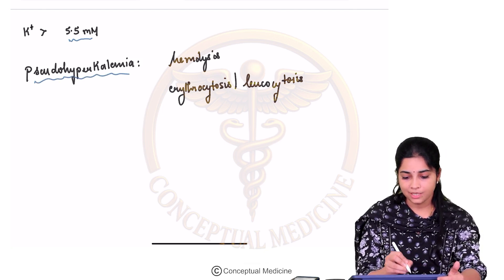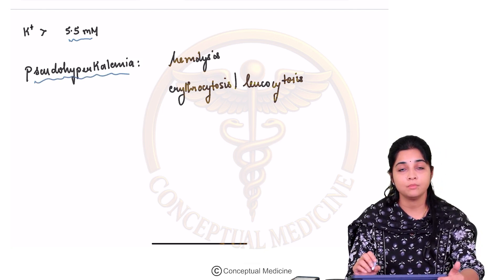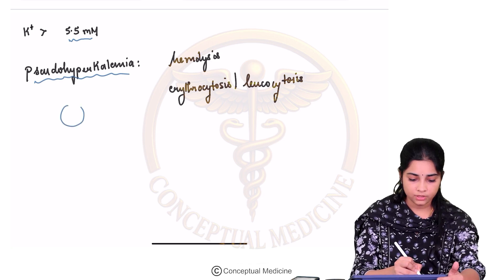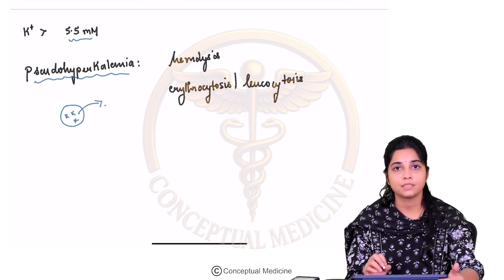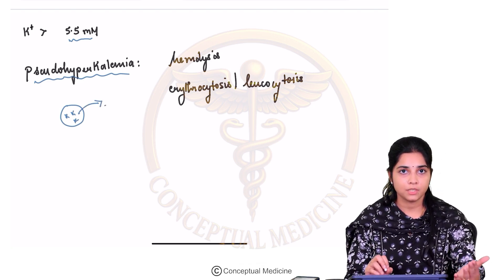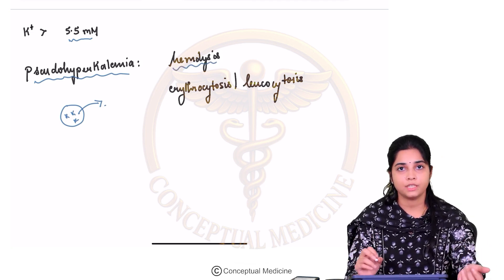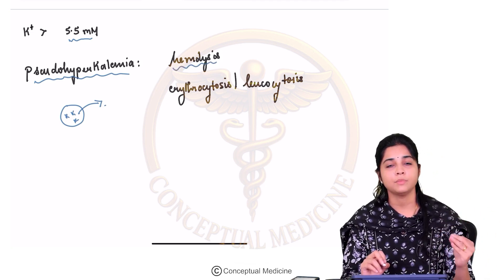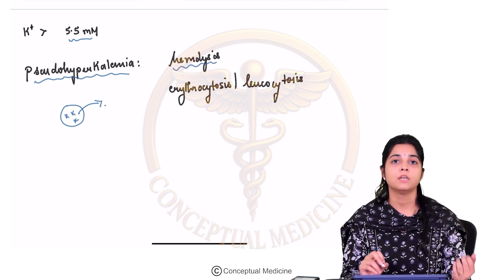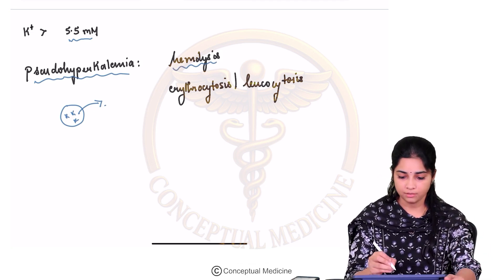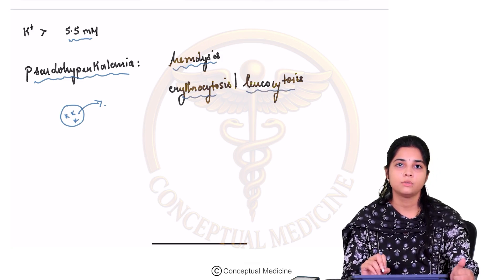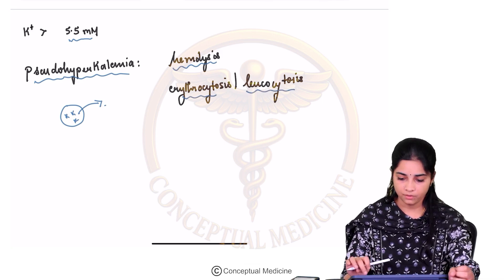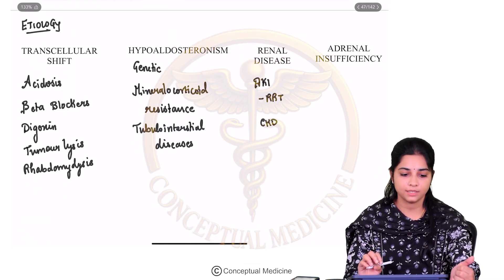Always rule out pseudo-hyperkalemia first. Pseudo-hyperkalemia can occur because potassium is predominantly an intracellular ion, so whenever potassium moves out, it can result in pseudo-hyperkalemia. Whenever there is hemolysis — for example, if you take a sample and leave it — the cells begin to break and it causes pseudo-hyperkalemia. In erythrocytosis or leukocytosis also, you can have pseudo-hyperkalemia.